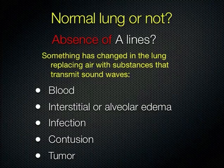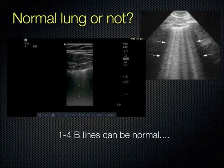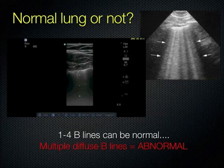B-lines are vertical artifacts that erase the A-lines. A normal aerated lung has A-lines, but if you have B-lines, these are artifacts created by fluid in the lung that will obliterate the A-lines. Normally you can have a couple of small ones — up to three or four — that can be normal. But if you have multiple diffuse B-lines in multiple fields, that is abnormal: fluid has overtaken the air in the lung. That fluid next to the air creates a reverberation that is vertical.